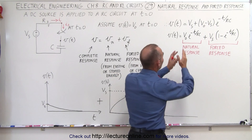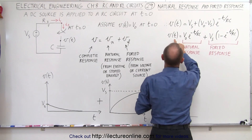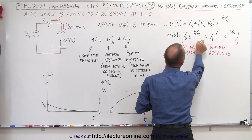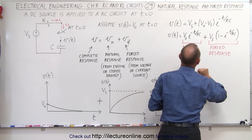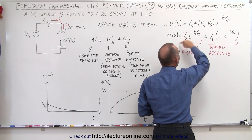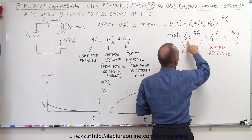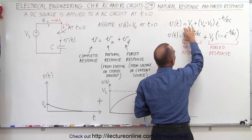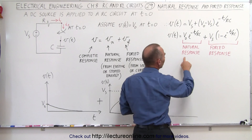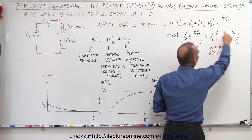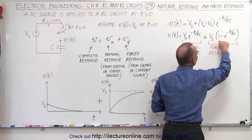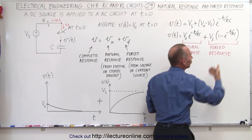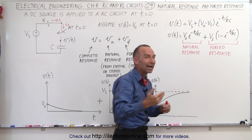In our equation, we can actually separate those two. We can see that the voltage across the capacitor is equal to this component plus this component. This first component is what we call the natural response of the circuit, because it's driven by the voltage already across the capacitor at time equals zero. The second component is what we call the forced response, because it's due to the voltage input of the source, which doesn't get turned on until time equals zero.